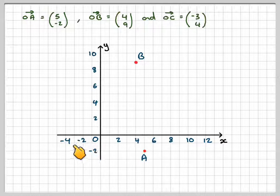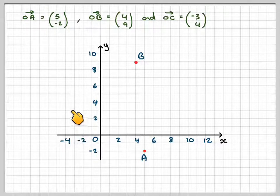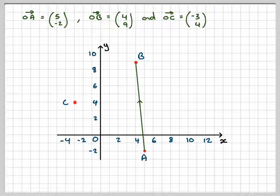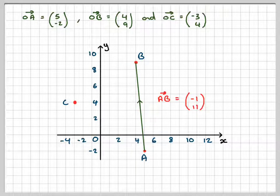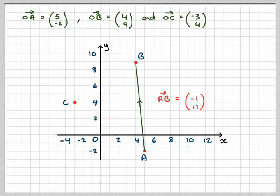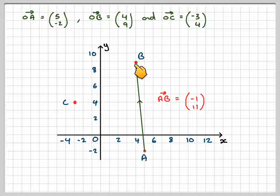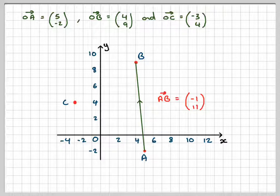And OC is going to be 3 along, and then 4 up, which is going to be over here. Right, let's just take the first case. Now, the vector AB is this one. When we did this, we got an answer for AB to be (-1, 11), and then up 11. We can see that's true. Back 1, and then up 11. How did we calculate it?